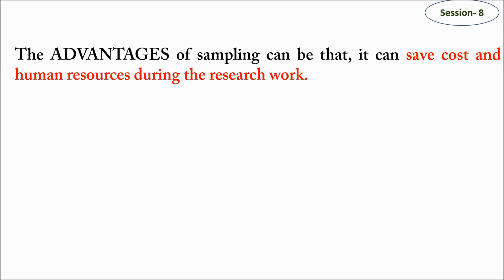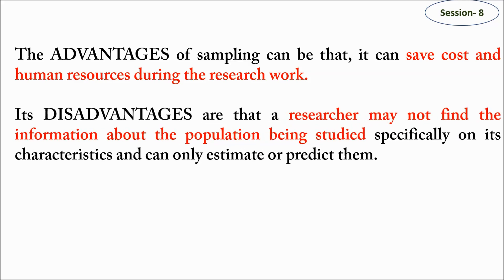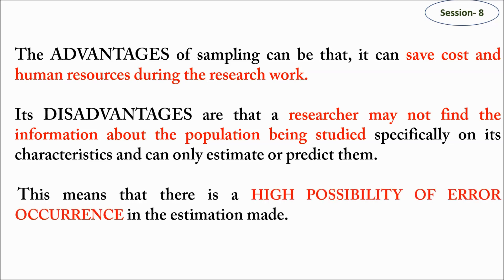The advantages of sampling include that it saves cost and human resources during research work. However, a researcher may not find exact information about the population being studied and can only estimate or predict characteristics. This means there is a high possibility of error occurrence. Using a sample method, error occurrence has a high probability because it is not linked to the entire population — it is just based on a particular sample size of the population.